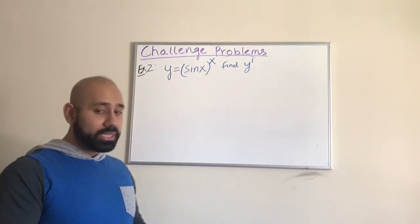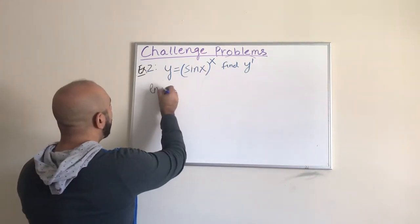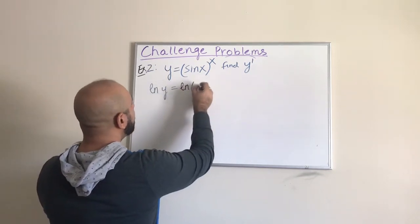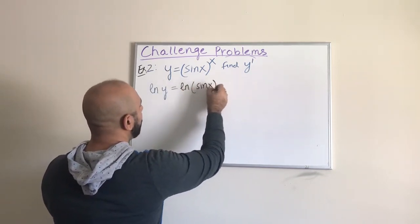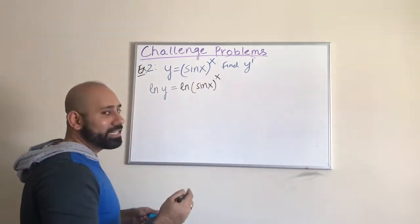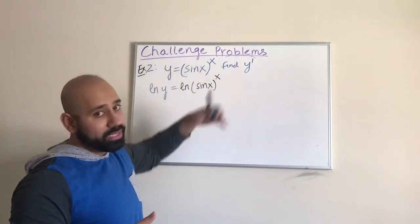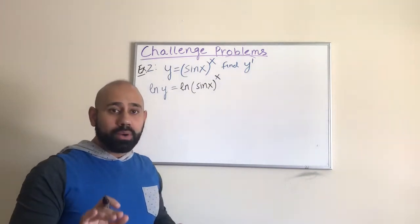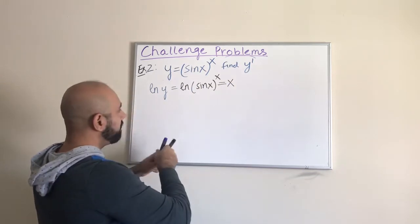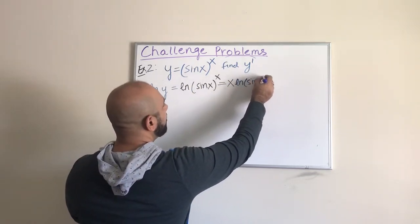Let us start by applying the natural log on both sides: ln(y) on the left. Applying the natural log to the right-hand side, we look at that expression — it is a quantity raised to a power, so we can use the power rule for logs. Using the power rule, the exponent comes up front, giving us x times ln(sin(x)).